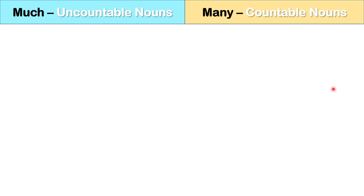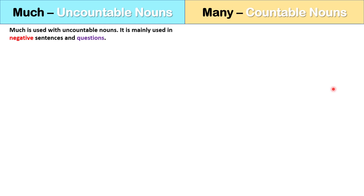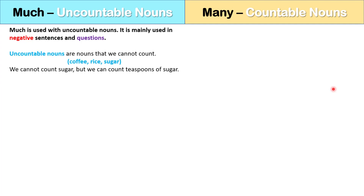So now let's review much and many in a bit more detail, and then we're going to do a practice quiz. Much is used with uncountable nouns, and it is mainly used in negative sentences and questions. Uncountable nouns are nouns that we cannot count, like coffee, rice, or sugar.